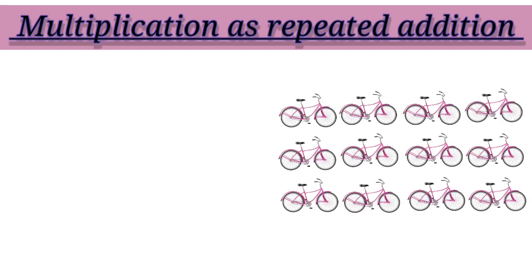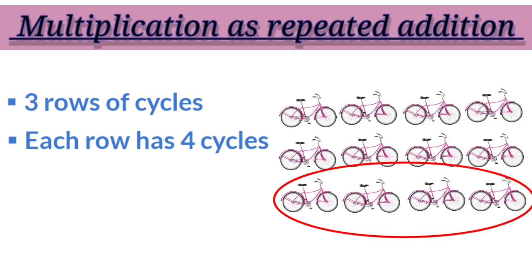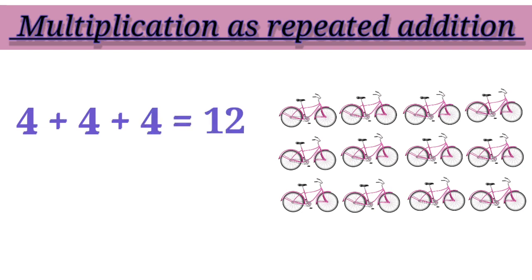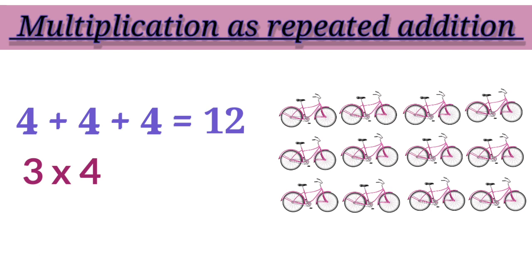In the next example, we have three rows of cycles. Each row has four cycles, which means on the first row we have four cycles, and on the second row we have another four cycles. So children, all together we have four plus four plus four, which means twelve cycles. Four plus four plus four is also the same as three times four. Hence, four plus four plus four equals to twelve, or three multiplied by four equals to twelve.